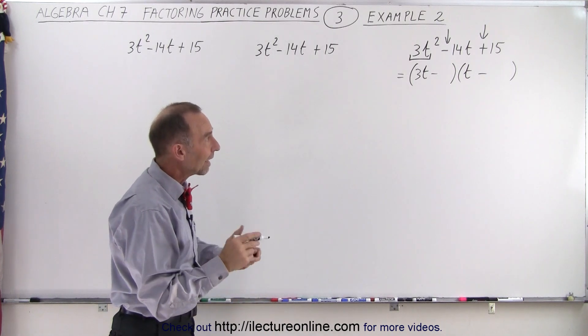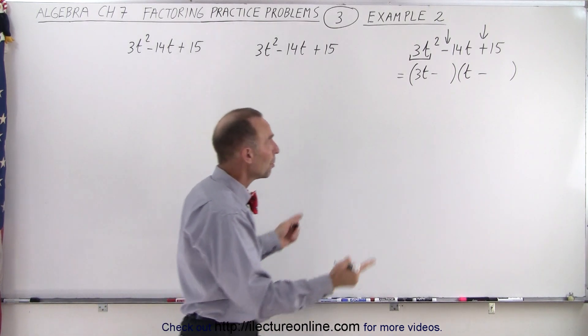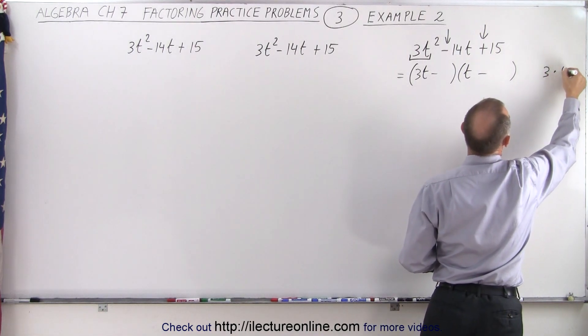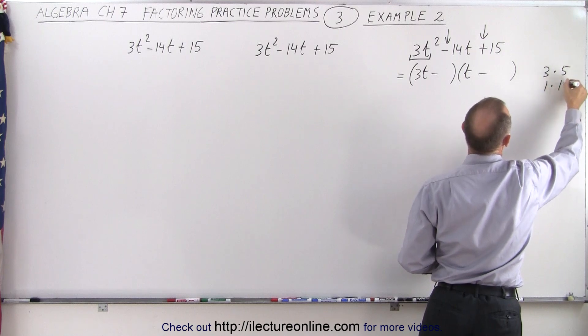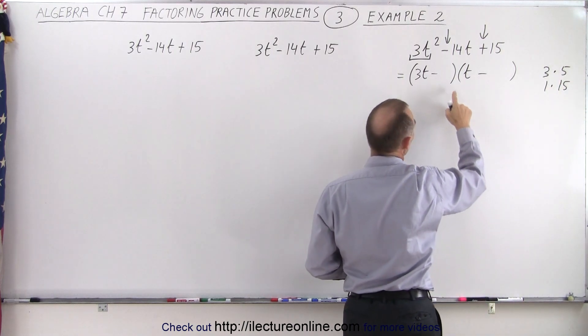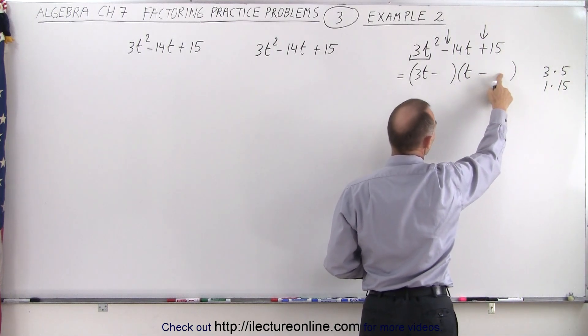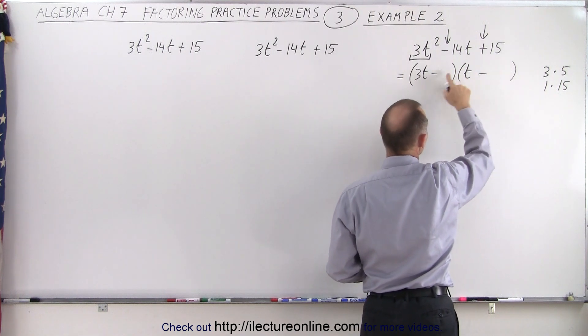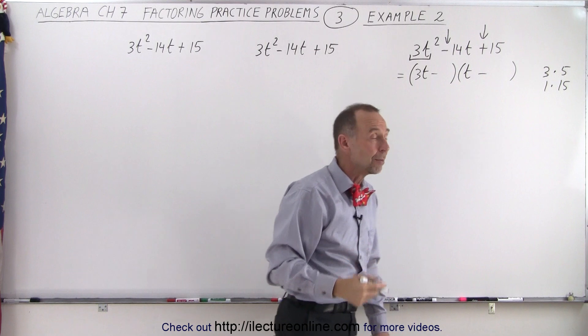Now to get the last two numbers we know that when we multiply them together we get 15. In other words, 3 times 5 or 1 times 15. Now the question is do we put the 3 and the 5 here or do we put the 5 here and the 3 there or a 1 and a 15 or a 15 and 1? There's four different combinations.